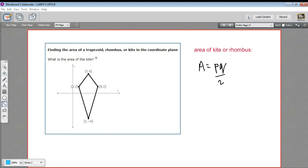In these problems, we need to find the areas of trapezoids or rhombuses or kites in the coordinate plane. And we spent some time finding the area of a rhombus by dividing it up into four triangles. And you can do the same thing with a kite.